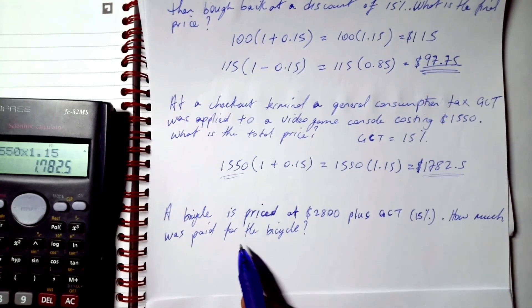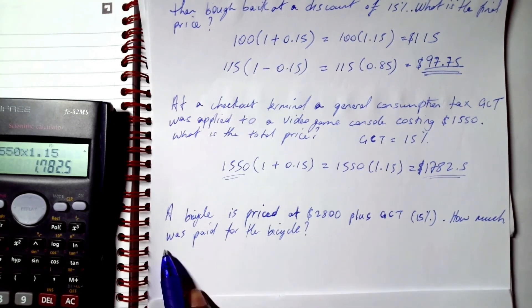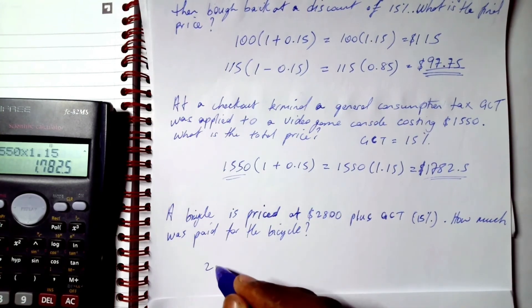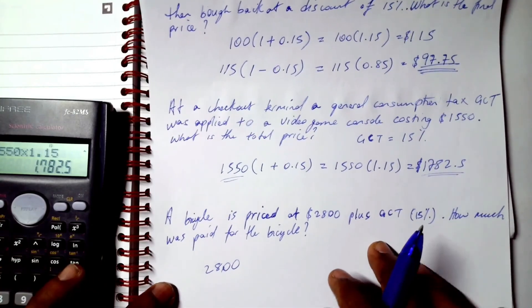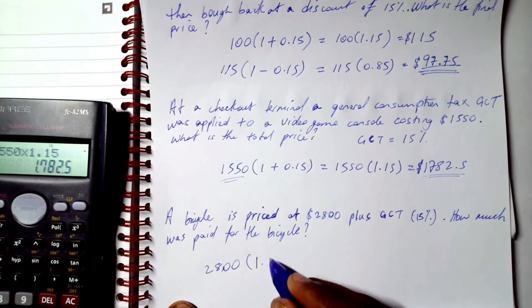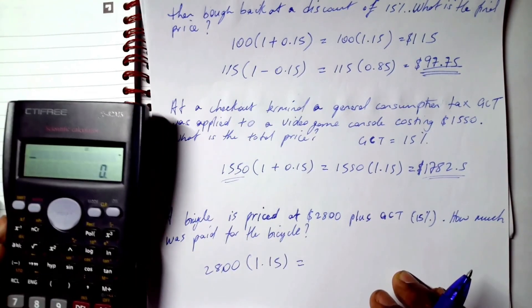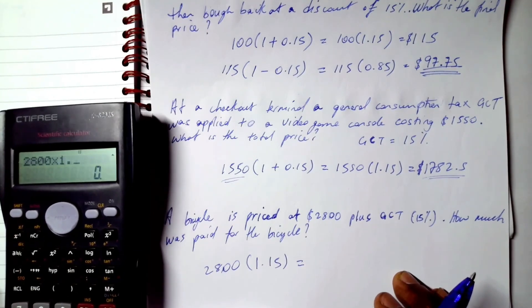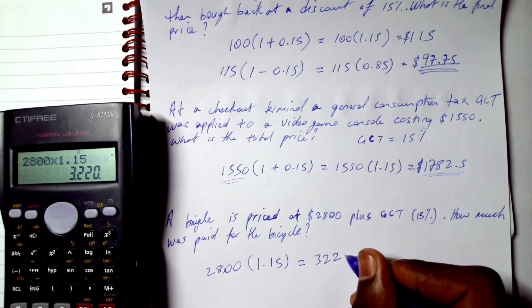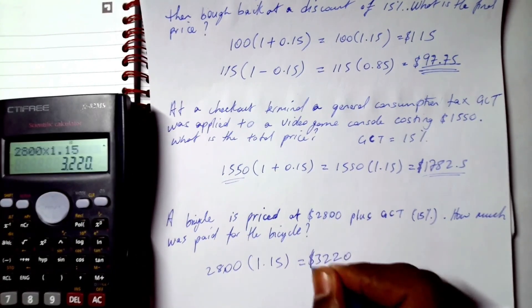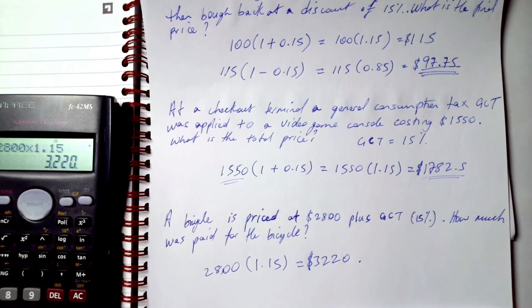A bicycle is purchased at $2800 plus GCT 15%. How much was paid for the bicycle? Same procedure: 2800 × 1.15, which equals $3220. And that's your GCT. Stay tuned for more examples.